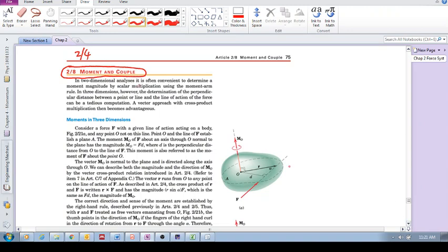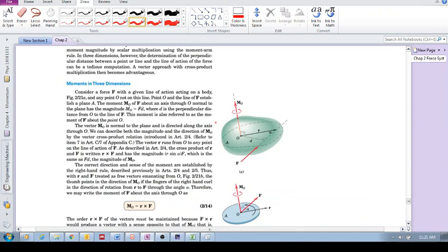So let's look at this figure here, this body over here. There's a force F being applied to the body, and we consider any point that's not on the line of action. If we want to determine what is the moment of this force about O, remember we're in three dimensions, not in 2D.